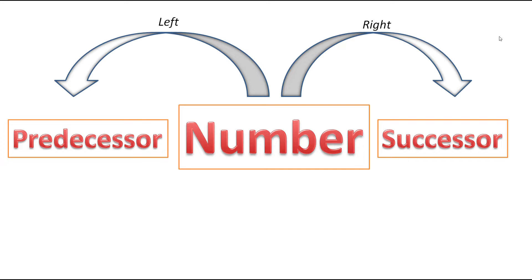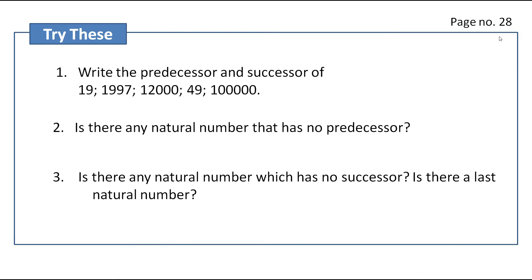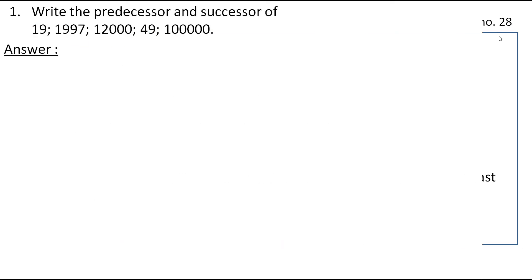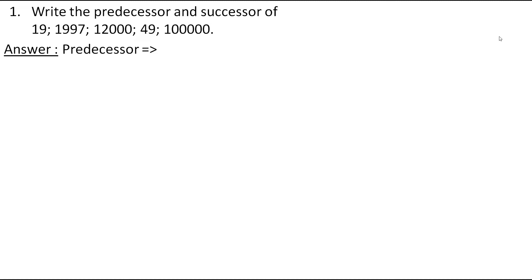Now, in your textbook on page number 28, you have these questions in the Try This box. Let's solve them one by one. The first question is: write the predecessor and successor of the given numbers. Let's find predecessor first. To find predecessor, we subtract 1 from the given number. The given number is 19. Subtracting 1, we get 18. Therefore, the predecessor of 19 is 18.